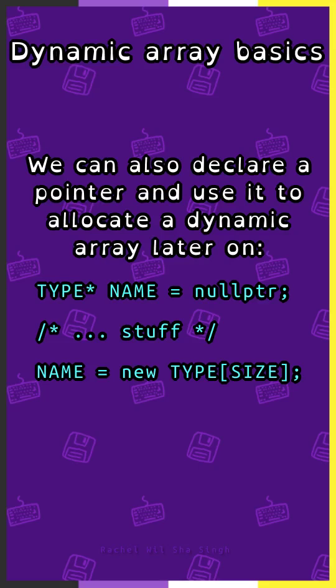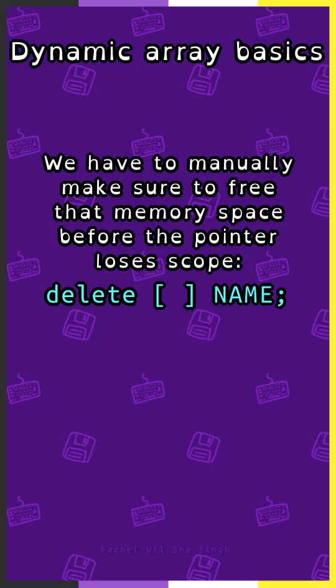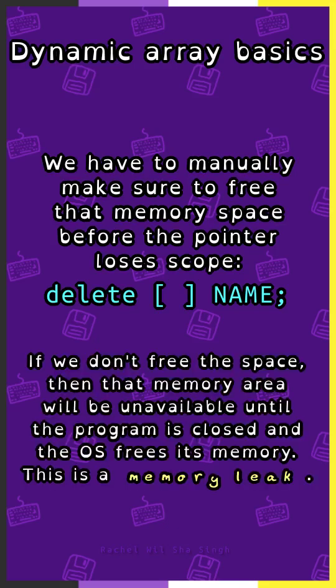We have to manually make sure to free that memory space before the pointer loses scope, with: delete, square brackets, pointer name. If we don't free the space, then that memory area will be unavailable until the program is closed and the OS frees its memory. This is a memory leak.